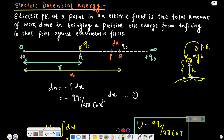The potential energy of the ball-Earth system can convert into kinetic energy. As the ball falls, kinetic energy increases while the potential energy of the system decreases.